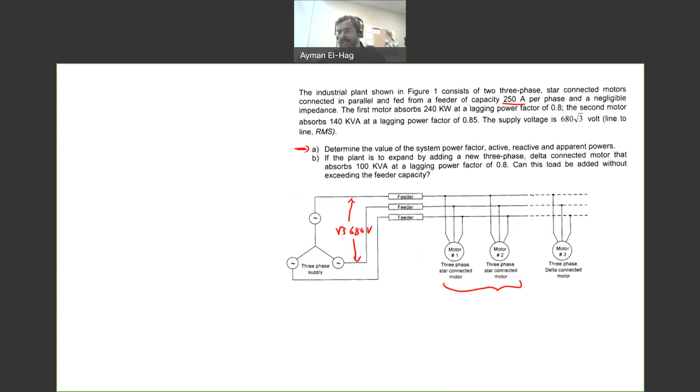So we want to find what is the P of the system, the Q of the system, power factor of the system, and the apparent power of the system. So that is very close to some of the questions we did before.